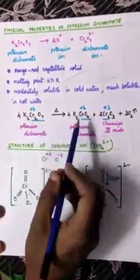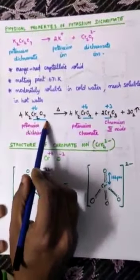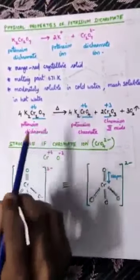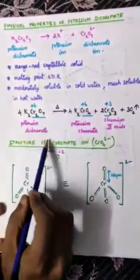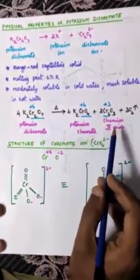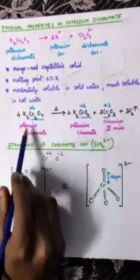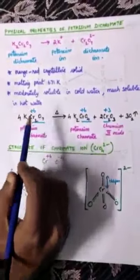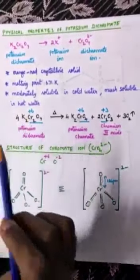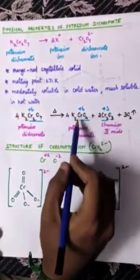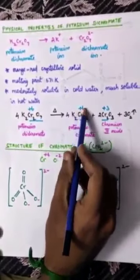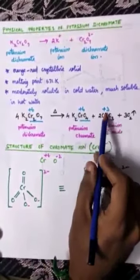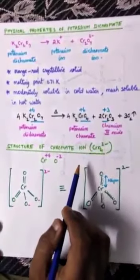Now I am going to discuss the action of heat on potassium dichromate — what happens when potassium dichromate crystals are heated gently in a dry test tube. The potassium dichromate gets converted into potassium chromate and chromium 3 oxide. In potassium dichromate chromium is at plus 6, in potassium chromate also plus 6, and in chromium 3 oxide chromium is at plus 3.